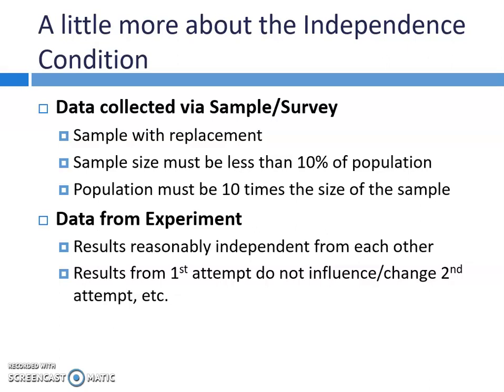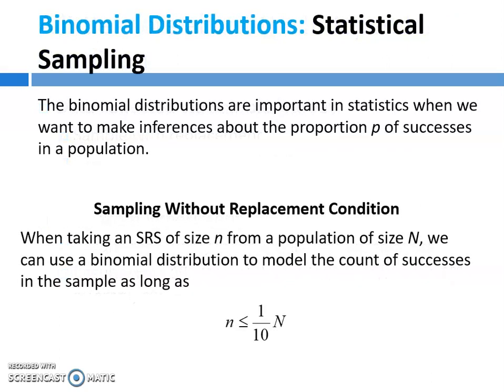If your data is from an experiment, we just need to make sure that the results are reasonably independent from each other and that the results from the first attempt do not influence or change the second attempt. Binomial distributions are very important in statistics when we want to make inferences about the proportion P of successes in a population. When you're taking a simple random sample of size n from a population of size N, we can use a binomial distribution as long as the sample size is less than a tenth of the population size — sometimes known as the 10% condition. If you're sampling with replacement, you don't need to worry about it.